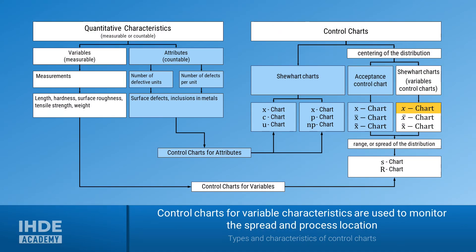To classify the X-Chart in comparison to other quality charts, this picture shows the connection between various characteristics and the control charts used. The different characteristics are shown on the left and the different control charts on the right. The quantitative characteristics on the left can be divided into two categories. First, the variable characteristics — these are all characteristics that can be measured. They always have a value and a unit. Examples include length, hardness, weight, surface roughness, or tensile strength of a component.